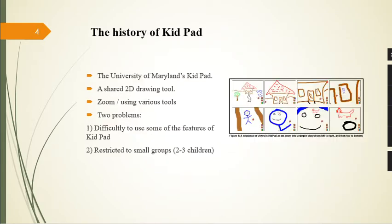The base of magic carpet is KidPad. In fact, they have extended the University of Maryland's KidPad. It is a shared 2D drawing tool that allows children to create their stories. Children use various tools like crayon or paintbrush to create their story, and they can use zoom for seeing more details. Also, they are linking these elements together to create a sequence of events.